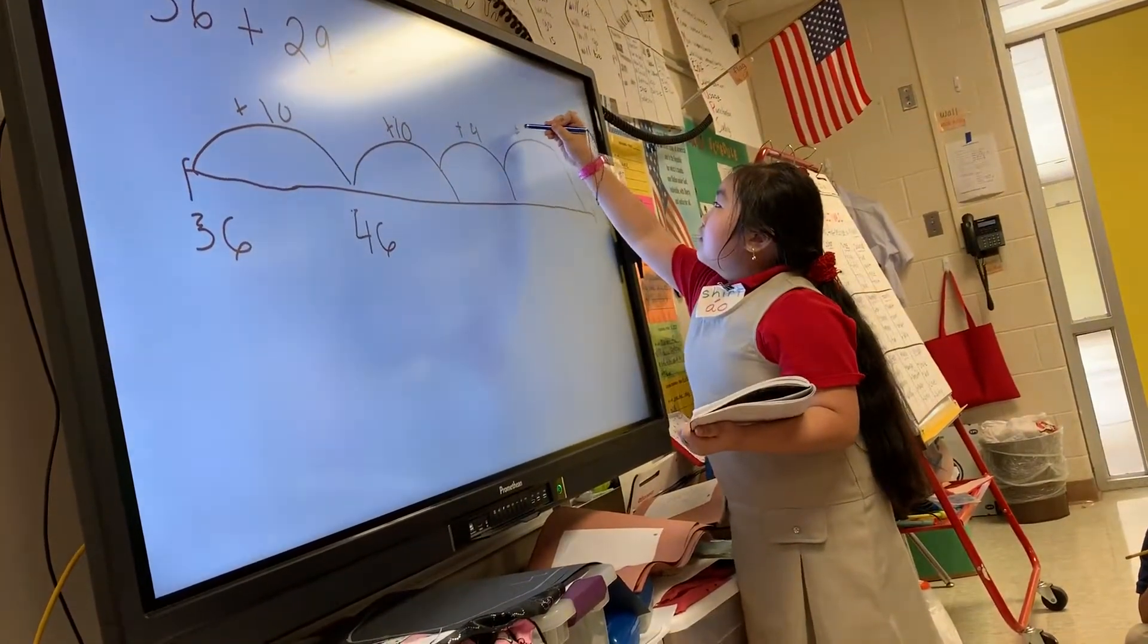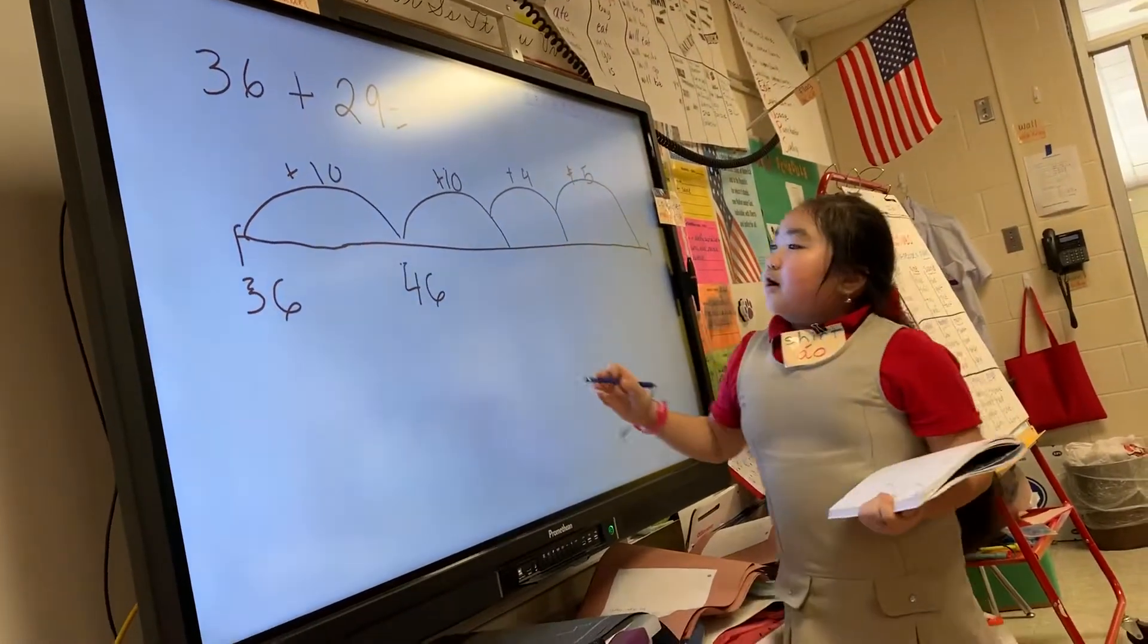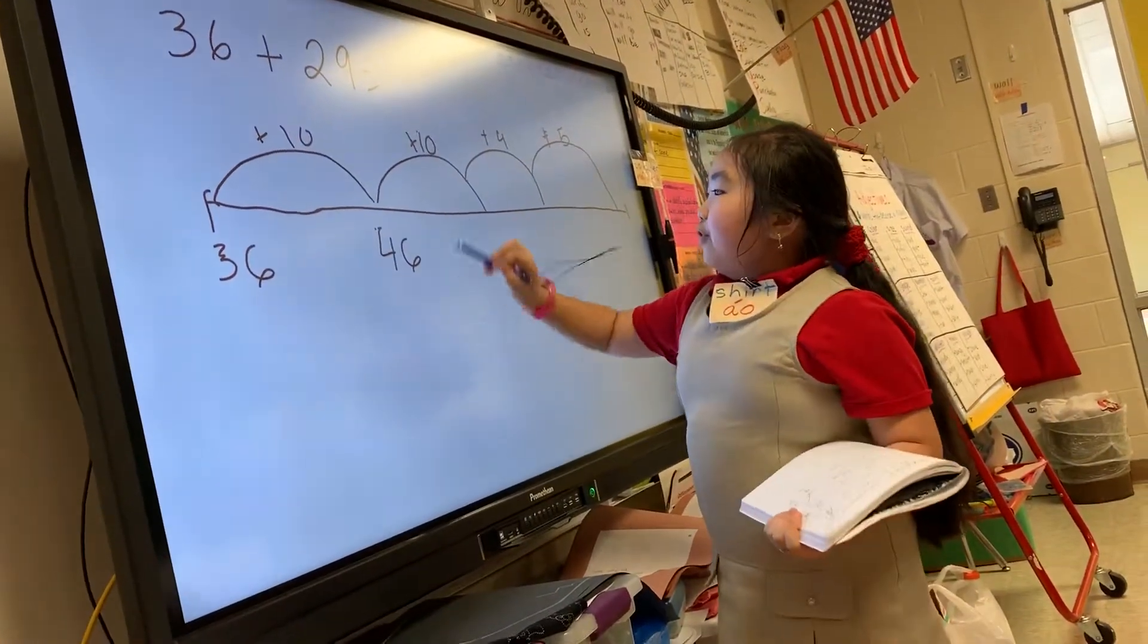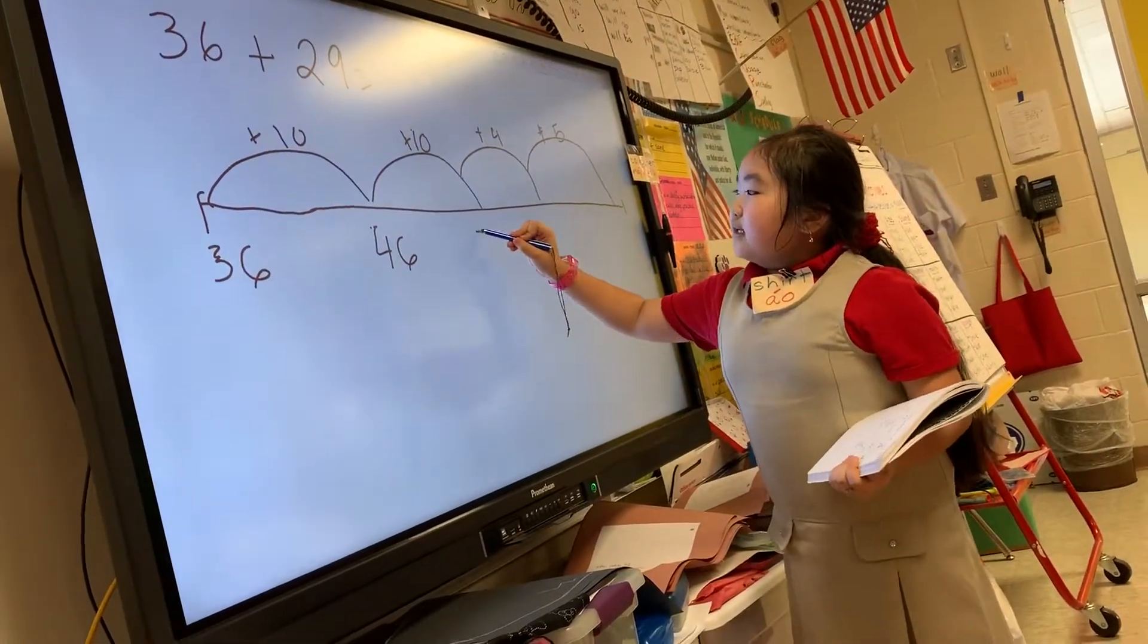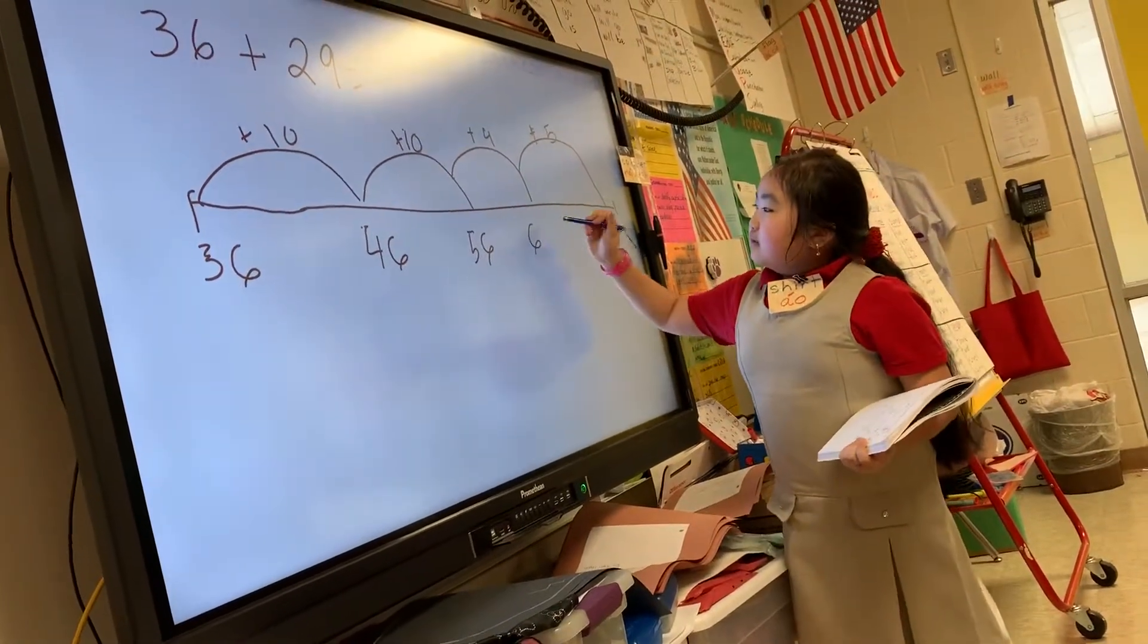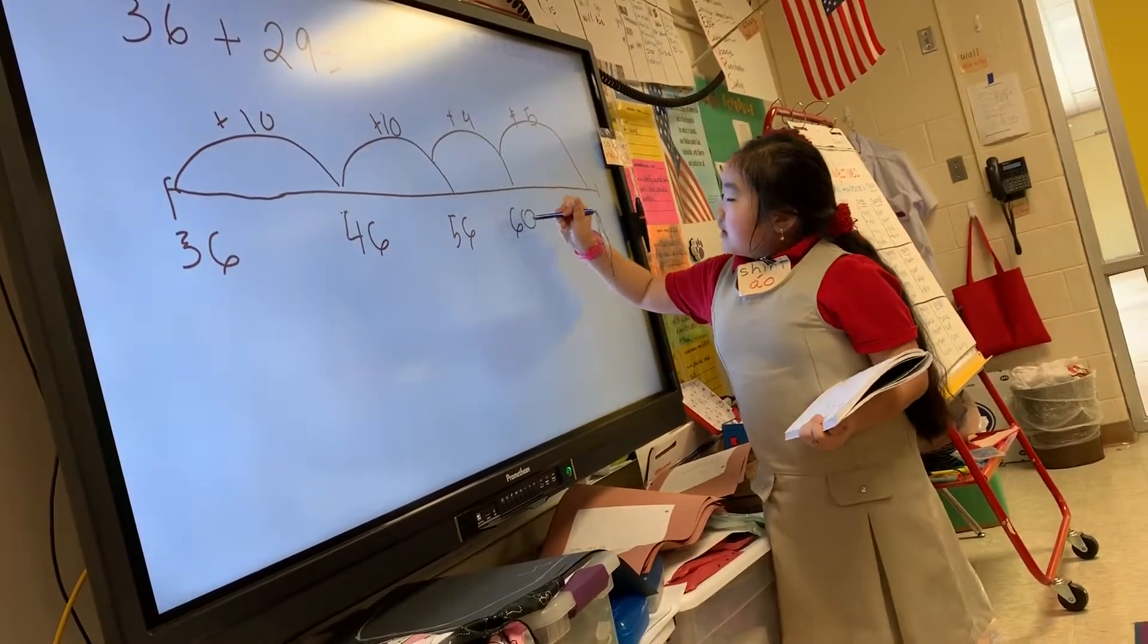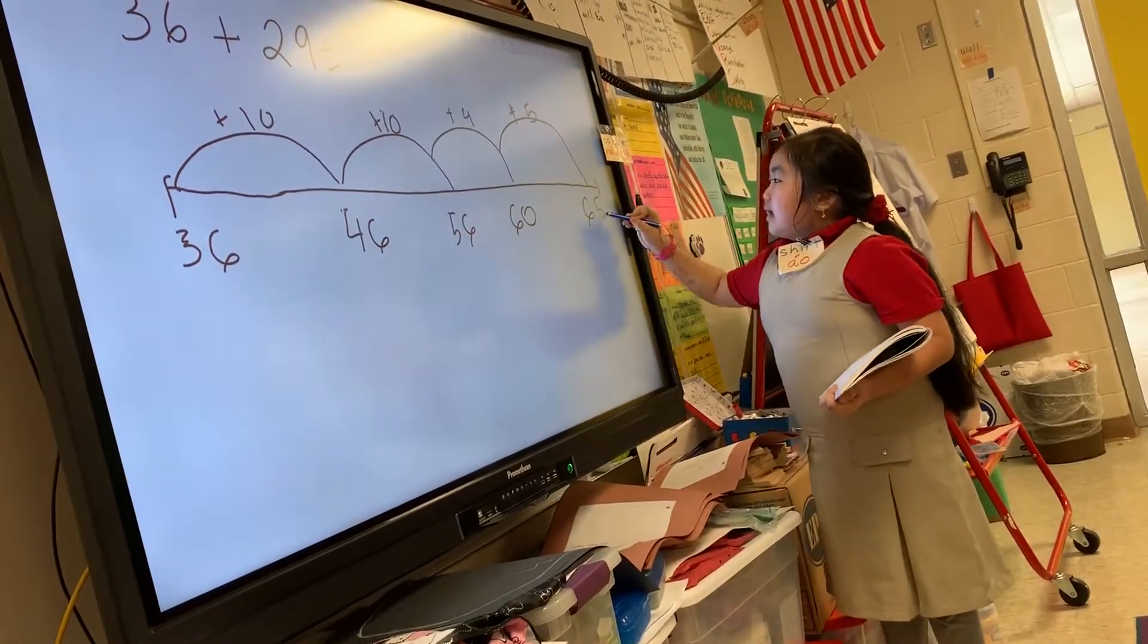So when I add 46 plus 10, it will be 56. Then I add 4, it will be 60, and I add 5, so it will be 65.